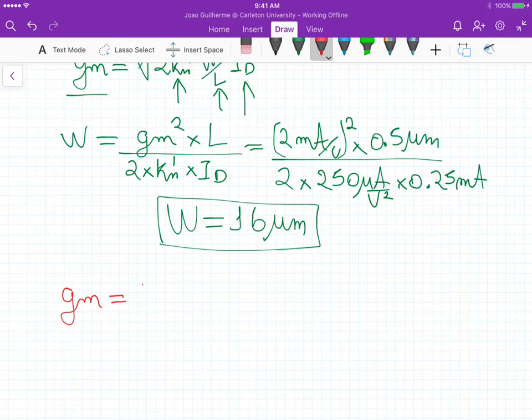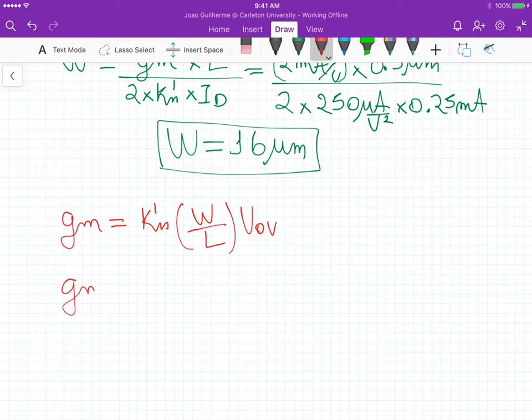transconductance. The transconductance equals the process transconductance times the aspect ratio times the overdrive voltage. And remember that the overdrive voltage equals VGS minus VT, so we can calculate the overdrive voltage